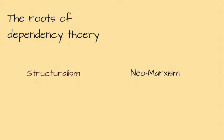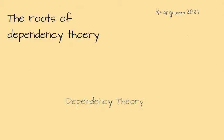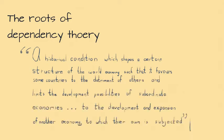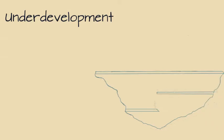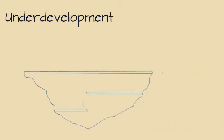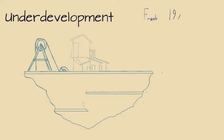On the other hand, critical development scholars, coming from both the neo-Marxist tradition and the Latin American structuralist school of thought, diverge on this idyllic interpretation of development. This strain of thought came to be part of the dependency theory research paradigm. On a general note, dependency theory can be conceptualized as a historical condition which shapes a certain structure of the world economy, such that it favors some countries to the detriment of others, and limits the development possibilities of the subordinate economies to the development and expansion of another economy, to which their own is subjected. Dependency theory studies underdevelopment as a historically determined process, implying its occurrence in parallel with development and capitalist expansion. This notion of the development of underdevelopment is one of the most important contributions of dependency scholars.